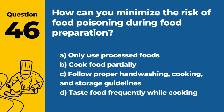Question 46. How can you minimize the risk of food poisoning during food preparation? a. Only use processed foods. b. Cook food partially. c. Follow proper hand washing, cooking, and storage guidelines. d. Taste food frequently while cooking. Answer c. Follow proper hand washing, cooking, and storage guidelines. Minimizing the risk of food poisoning during food preparation involves following proper hand washing, cooking to the right temperatures, and storing food safely.